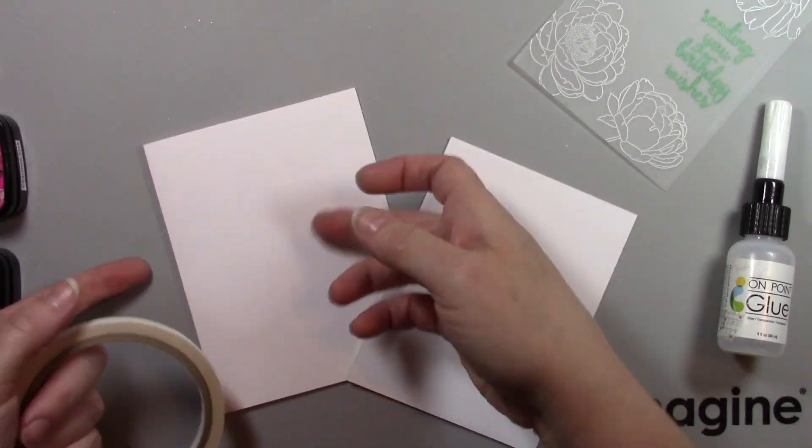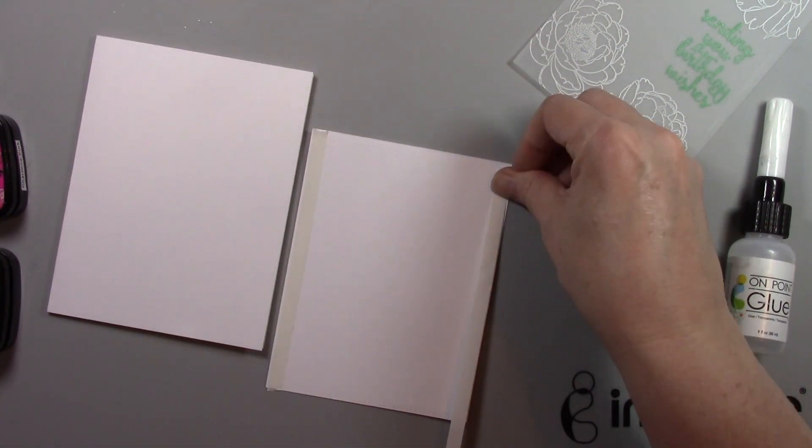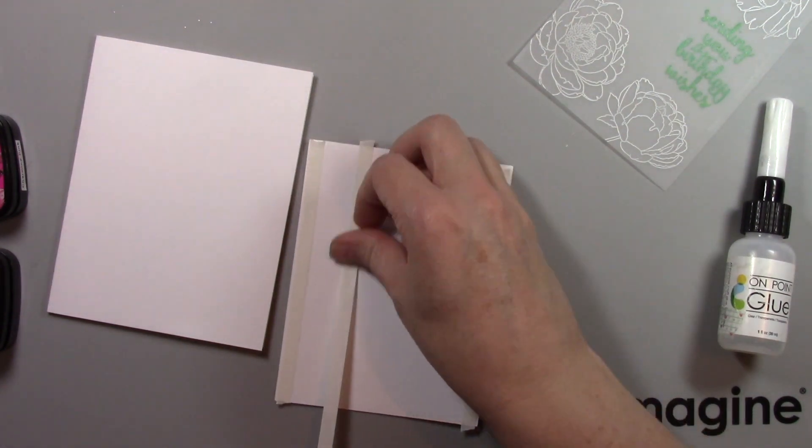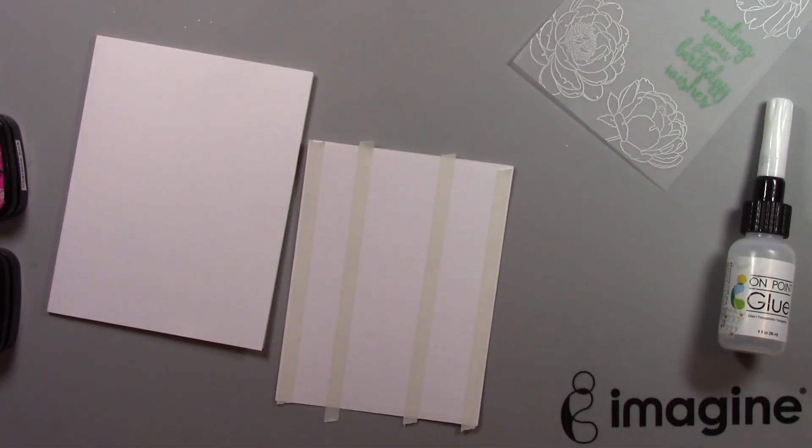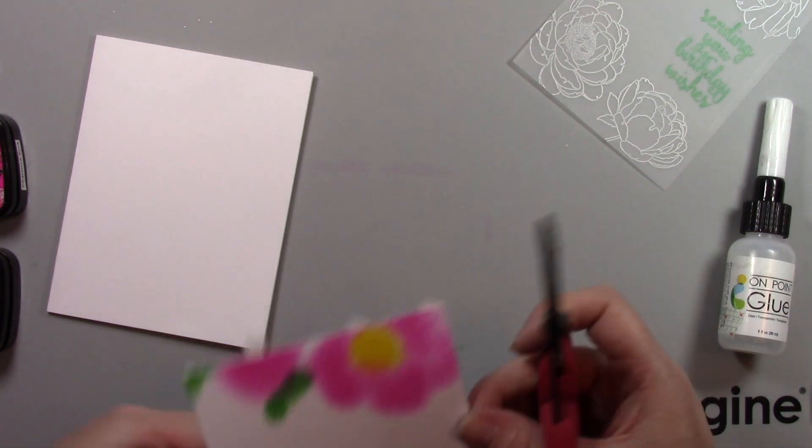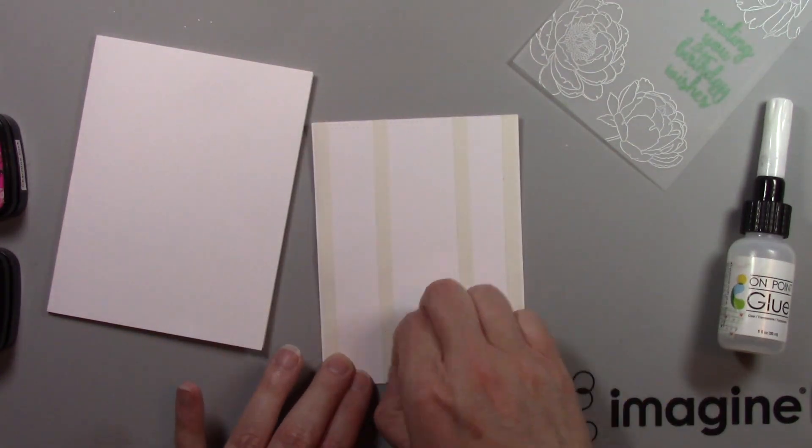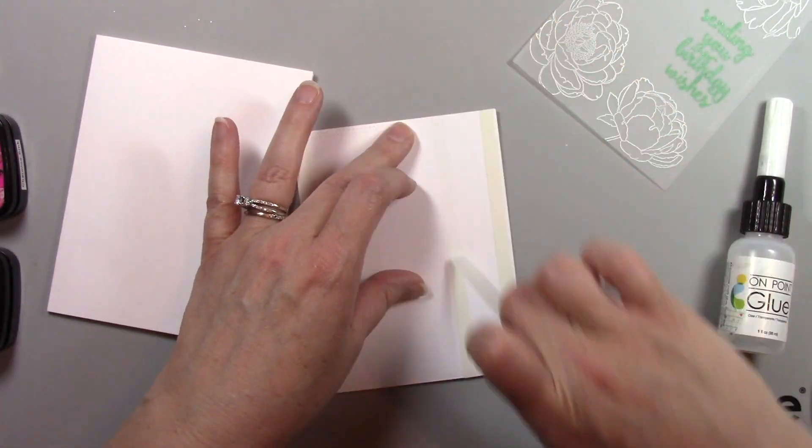So I'm going to speed up my video just a little bit here as I'm just adhering the inked background to my A2 size card base with Tarrot Tape. Tarrot Tape is a fabulous double sided sticky tape that you can add to the back of your cards to really get a very well adhered panel.